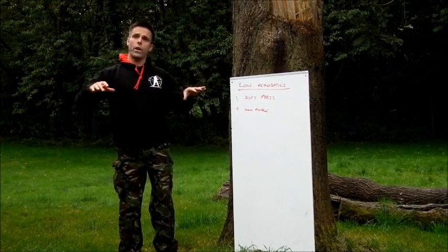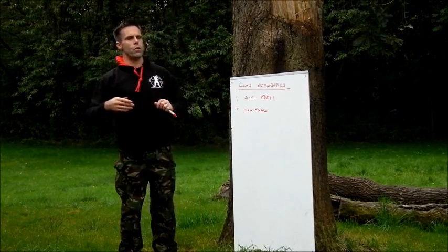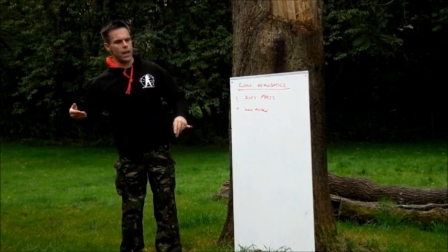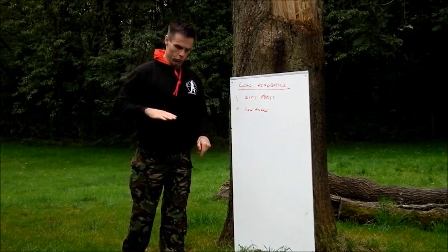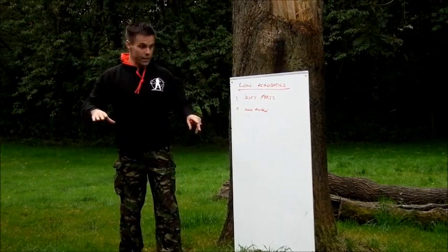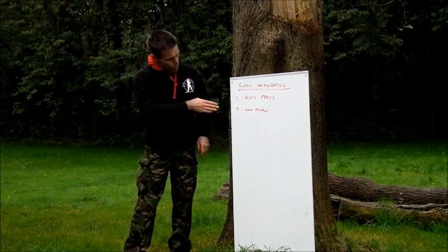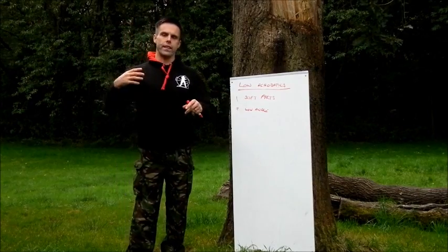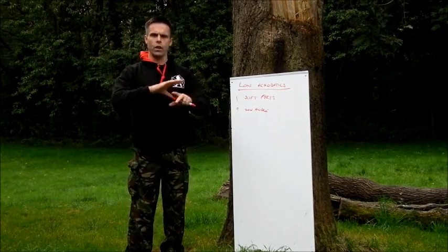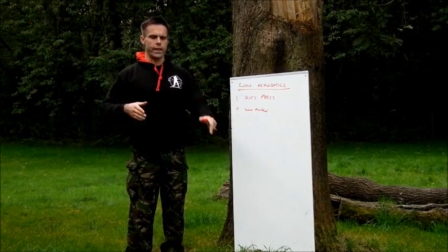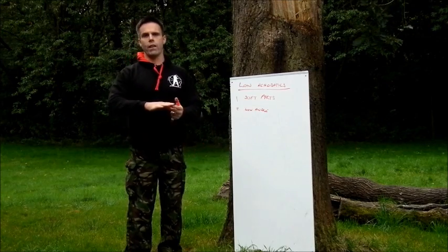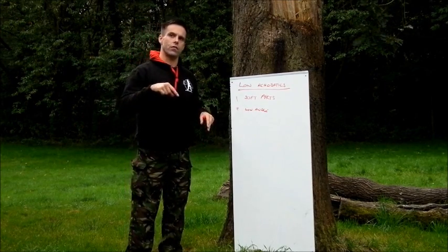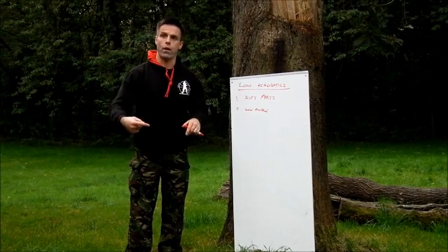So any point that we are practicing low acrobatics — whether it be rolling over a table, underneath something, sliding to the floor, rolling across the floor — what we are trying to achieve is a low angle. You need to understand these things because when we're telling you to lower the angle during rolling practice, it makes a difference as to why we practice the rolls the way we do.